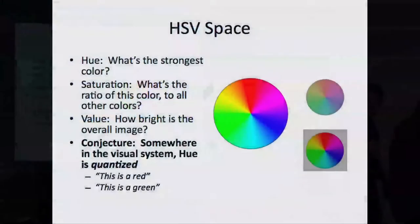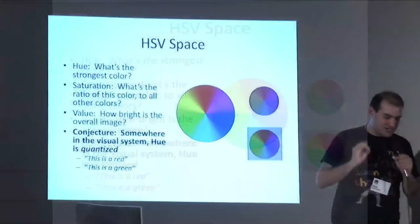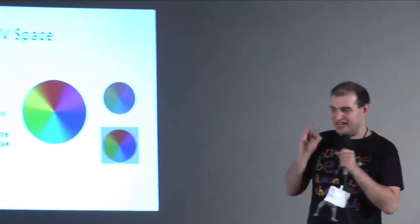There is a color space called HSB. And you split color into what's the strongest color? Hue. What's the ratio color? Saturation. And what's the overall brightness? I conjecture that there is a HSB layer in the brain.